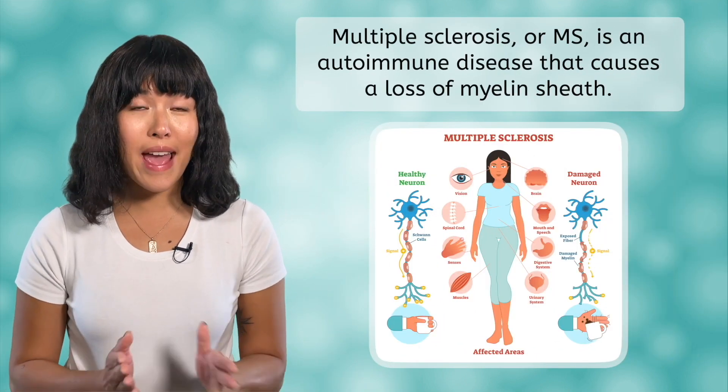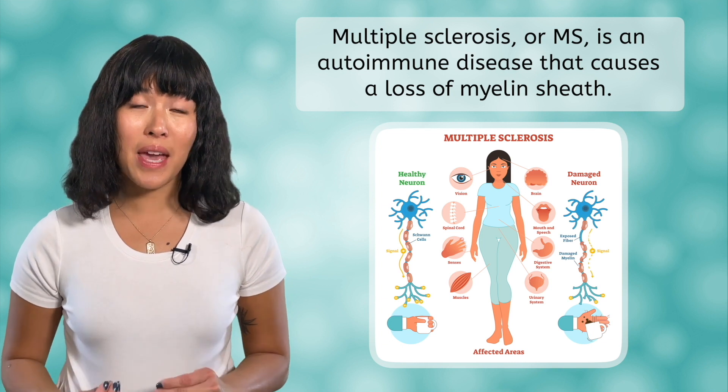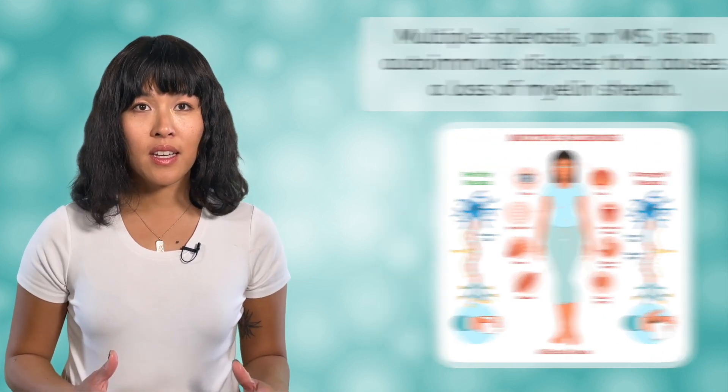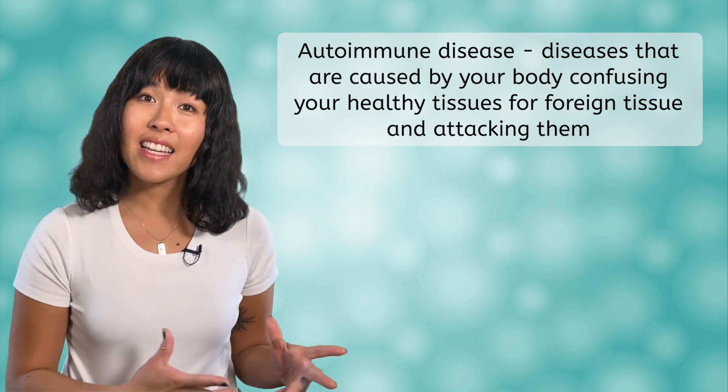After spending this lesson learning about the structure and function of the nervous system, it is probably clear that a fully functioning nervous system is vital to a healthy life. Unfortunately, there are numerous disorders that can affect the functionality of the nervous system. Multiple sclerosis, or MS, is an autoimmune disease that causes a loss of myelin sheath, which can cause debilitating pain and a loss of control of your muscles and movements. Autoimmune diseases are caused by your body mistaking your healthy tissues for foreign tissues and attacking them. Scientists believe MS is caused by a combination of genetics and environmental factors.